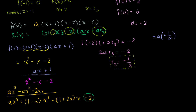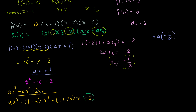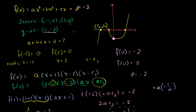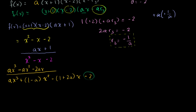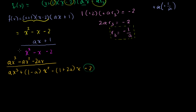This is why I said at the beginning the problem wasn't well defined — I can pick any real number for a and this equation will satisfy all the given conditions. So a = a, b = 1 - a, c = -(1 + 2a), and d = -2. I suspect there was a missing constraint, like a = 1, or b equals something specific, or a + b equals some value.